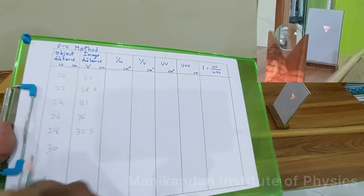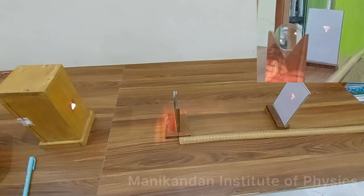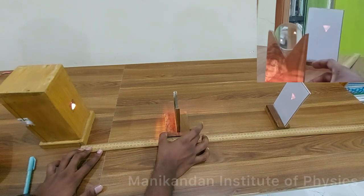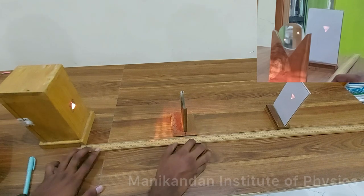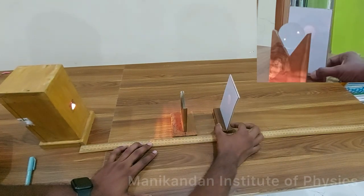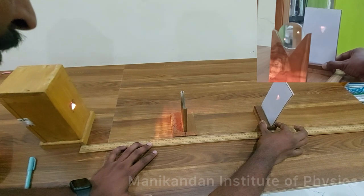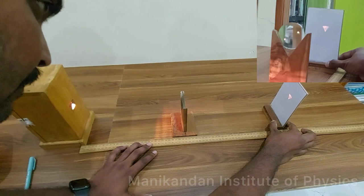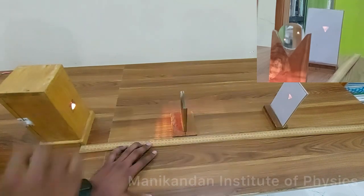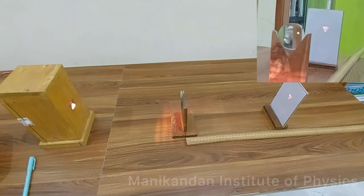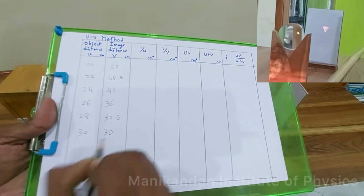Next, I fix the object distance at u = 30 centimeters, which is 2f. At 2f, the image should be real, inverted, and equal in size to the object. Moving the screen until a clear image forms, I measure the distance and find it is exactly 30 centimeters — so at 2f, object distance = image distance = 30 centimeters.